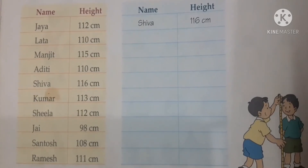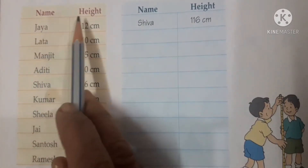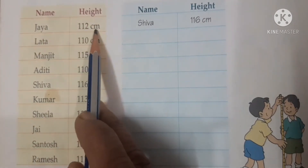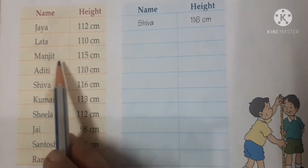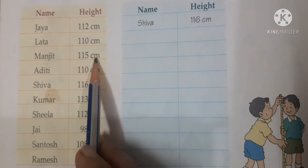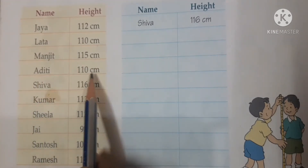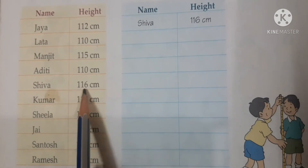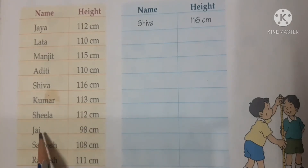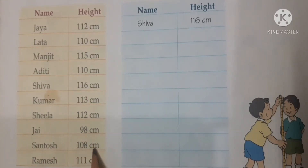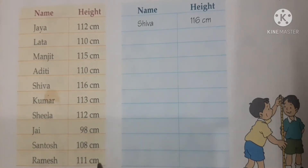Children, look here. The names and heights are: Jaya — 112 cm, Lata — 110 cm, Manjit — 115 cm, Aditi — 110 cm, Shiva — 116 cm, Kumar — 113 cm, Sheila — 112 cm, Jaya — 98 cm, Shanto — 108 cm, and Ramesh — 111 cm.